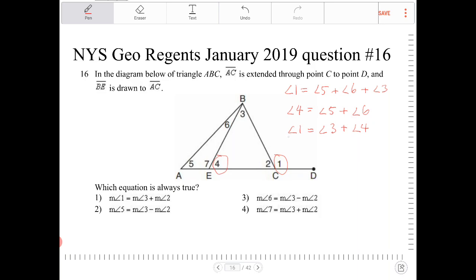So for this guy right here, what I just wrote down, angle 1 equals 3 plus 4, this is true for triangle EBC.